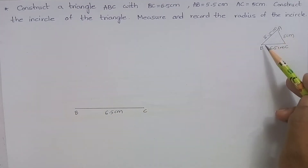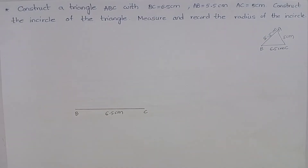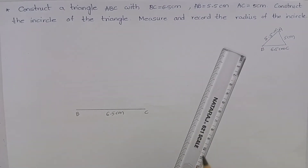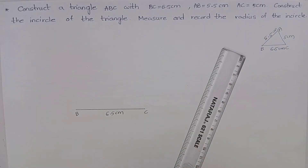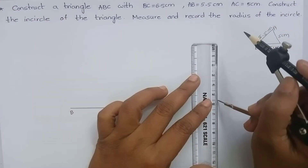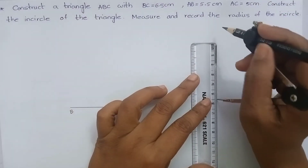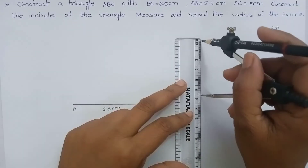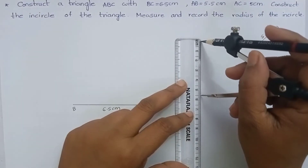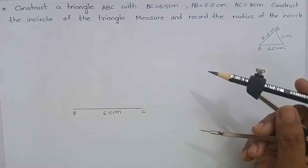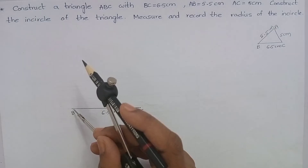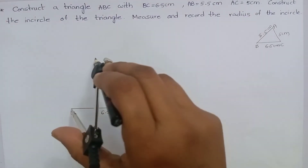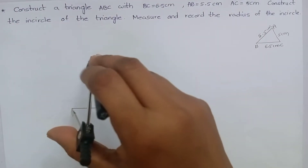AB is 5.5 cm. Measure 5.5 cm using ruler and compass. Keep the compass at the point B and mark an arc like this.